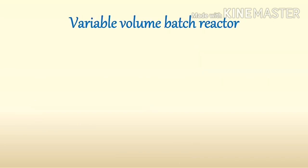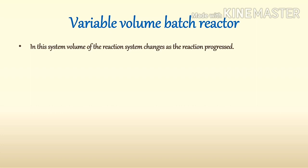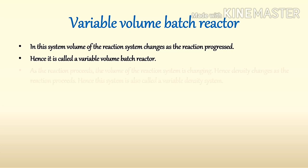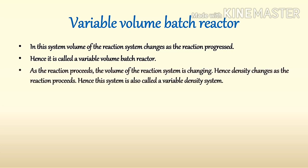Now let's see the variable volume batch reactor. In a variable volume batch reactor, the volume of the reaction system changes as the reaction proceeds. Hence it is called a variable volume batch reactor. Due to this change in volume, density will also change as the reaction proceeds. Hence this system is also called a variable density batch reactor.